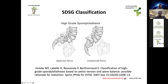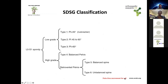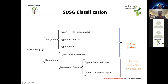A more up-to-date classification helps guide whether to fix in-situ or reduce. For low-grade spondylolisthesis — Grade 1 or Grade 2 — you can fix in-situ; it is not necessary to reduce.